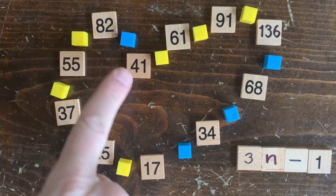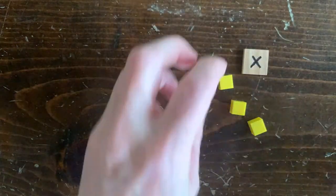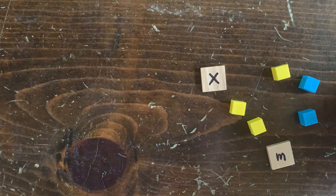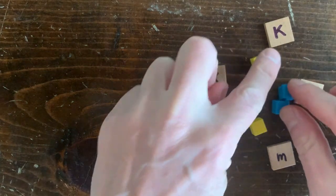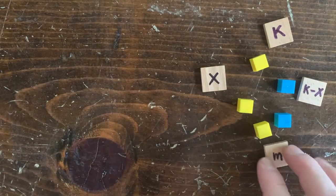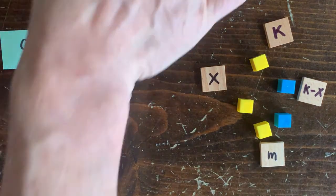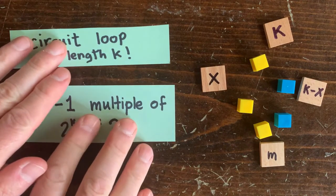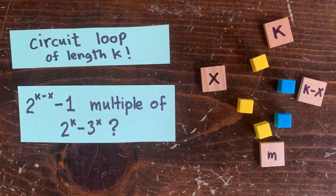This loop goes up, then down, then up, then down, so it's not a circuit loop like this one, which goes up x number of times, and then comes down k minus x number of times. If m is an integer, then we got a valid circuit loop, and we're trying to prove that no circuit loops exist, which amazingly boils down to showing 2^(k-x)-1 is never a multiple of 2^k - 3^x for any k and x.